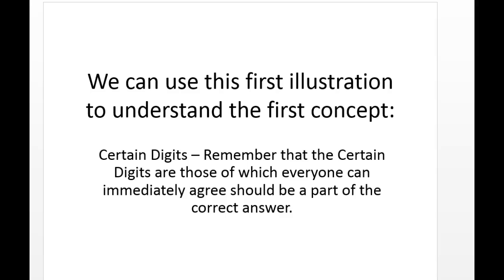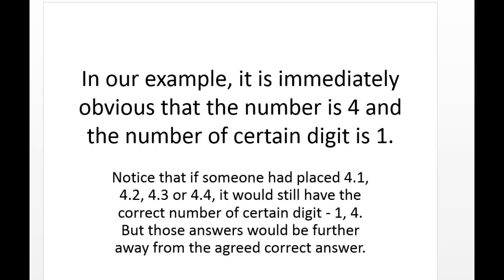The concept of certain digits - these are the digits that everyone can immediately look at and agree that this particular number, or this part of the number, should be part of the correct answer. In this example, we can see that 4 is that number. Everybody can agree that the number has to be 4. So the number of certain digits in this example would be 1, and that 1 number is 4. Now notice that if somebody had placed 4.1, 4.2, 4.3, or 4.4...